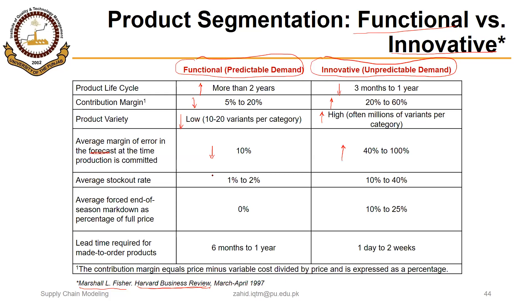Stockout rate is very low for functional products but much higher for innovative products. Average forced end-of-season markdown as a percentage of full price is almost zero for functional products, but significant for innovative products. Lead time required for make-to-order products is high for functional products compared to innovative ones, because processes are standardized and hard to change. However, processes are very flexible and adaptive for innovative products, making it easy to produce new variants.